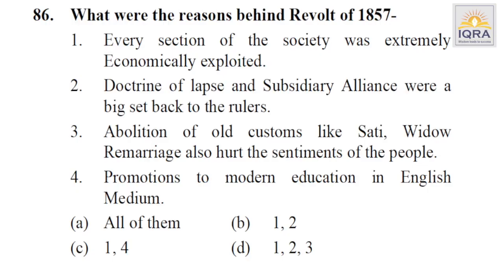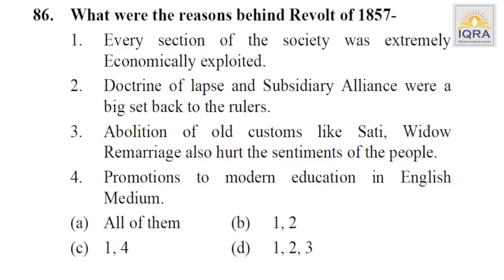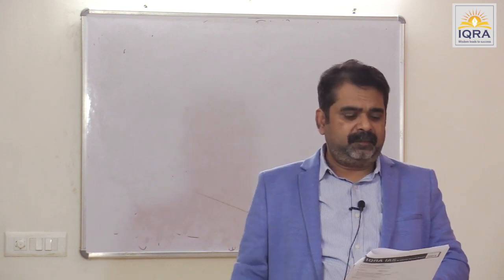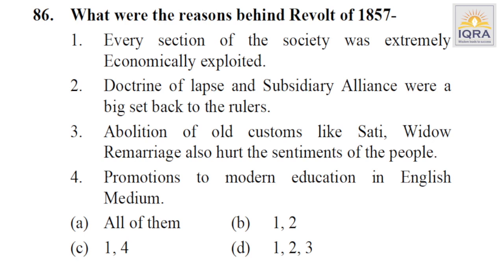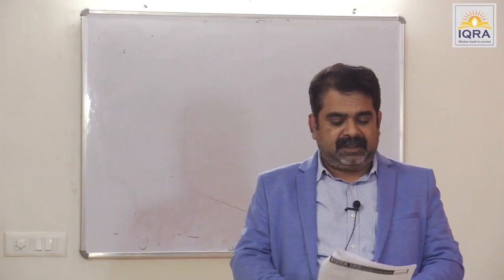What were the reasons behind the Revolt of 1857? Every section of society was extremely economically exploited — true: farmers, zamindars, old ruling class. Doctrine of Lapse and subsidiary alliance were a big setback to rulers. Abolition of old customs like Sati and widow remarriage hurt the sentiment of the people — true. Promotion of modern education in English medium. All four — 1, 2, 3 are correct. Answer is D.